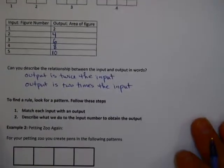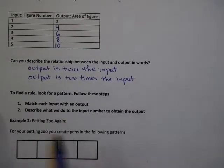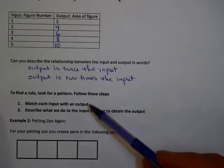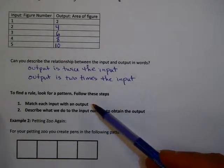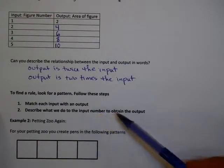So let's see how we make a rule in general. One of the things we can do is look for a pattern. You might want to follow these steps: match each input with the output, and describe what we do to the input number to obtain the output.